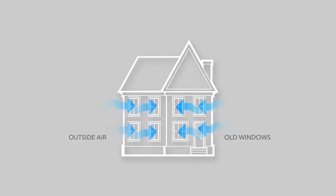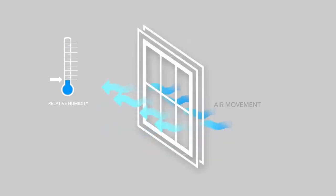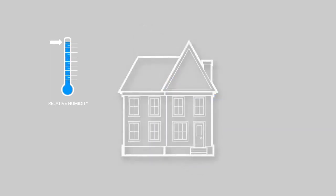If you hadn't noticed condensation before, it may be because your old windows were letting outside air into your home. When outside air leaks into your home through drafty windows, the relative humidity inside is lowered and condensation is less likely to form. Now that you have new doors or windows, the relative humidity of your home has risen due to a lack of air moving in from the outside. Condensation means that your new windows and doors are doing their job and keeping colder, drier air outside where it belongs.